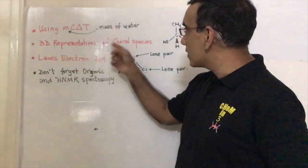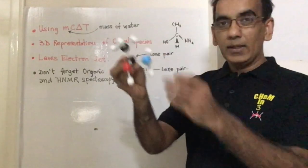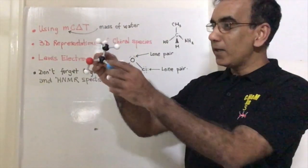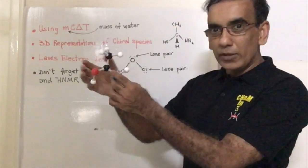I want to discuss 3D representations of chiral species. And here I have a model of a chiral structure, recalling that a chiral structure is one that's made up of a central carbon, an asymmetric carbon, attached to four different groups.